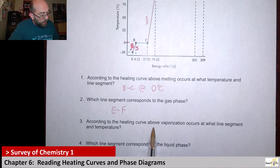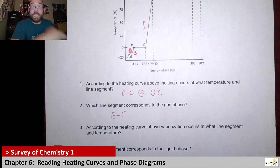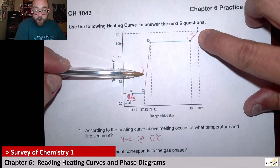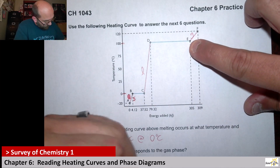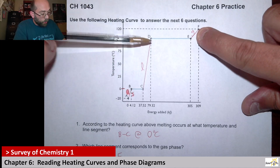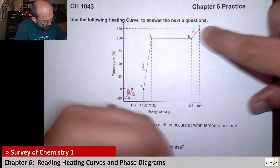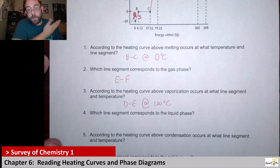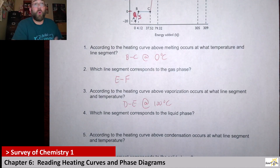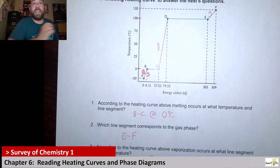Then it says: according to the heating curve above, vaporization occurs at what line segment and temperature? Vaporization is very similar to boiling — that's where you go from liquid to gas. So it's the interface between L and G, which should be segment DE. Vaporization means you are going from liquid to gas, which is why I wrote it in the order DE. The temperature is 100°C. This is for water, so that's why it's 100°C. If we change it to something like ethanol or ether, the overall look will be very similar, but the temperatures on the y-axis — 100°C and 0°C — those numbers would change.